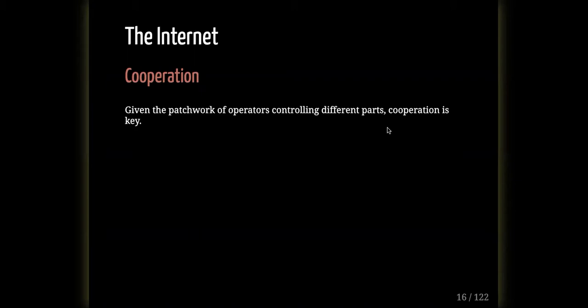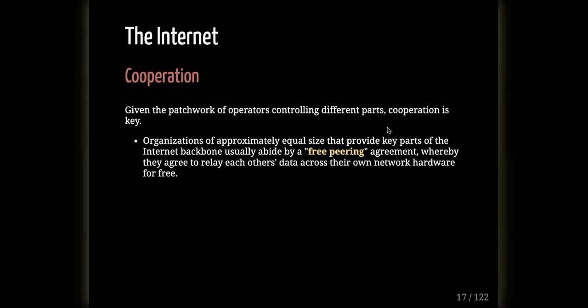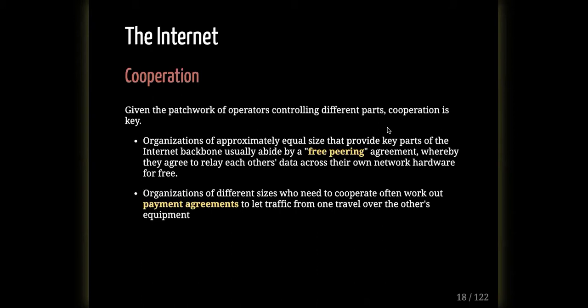How does data from one network travel across another's cables to reach its destination? Organizations of roughly equal size have 'peering agreements' where they let data from one network pass across another for free. Organizations of very different sizes have paid arrangements where one pays the other for data transit. There are legal contracts between these telecommunications and other companies that allow data to use each other's fiber optic cables — without those agreements, the internet wouldn't work.